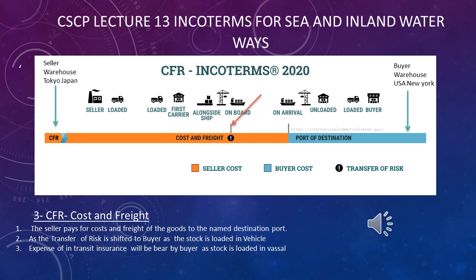Let's talk about term number three: CFR, Cost and Freight. The seller warehouse is in Tokyo, Japan and the buyer warehouse is in New York City. We divide the seller's responsibility into two entities: expense and risk. For expenses, all costs from the seller's warehouse in Tokyo to shipping the stock to the New York port are the seller's responsibility. For risk, the seller covers risk from the Tokyo warehouse until the stock is loaded onto the vessel.